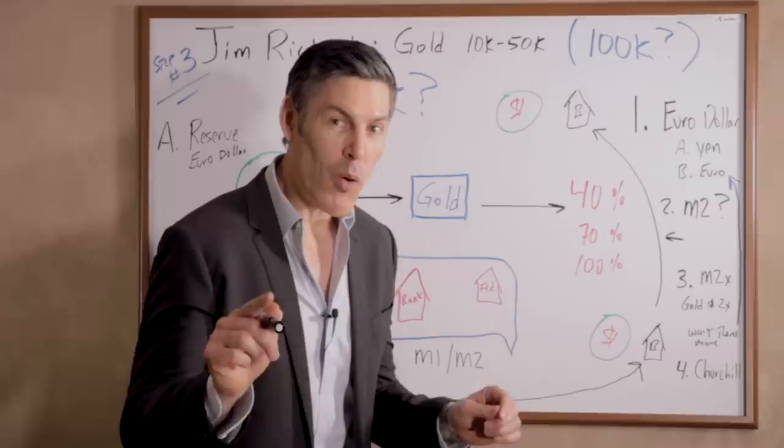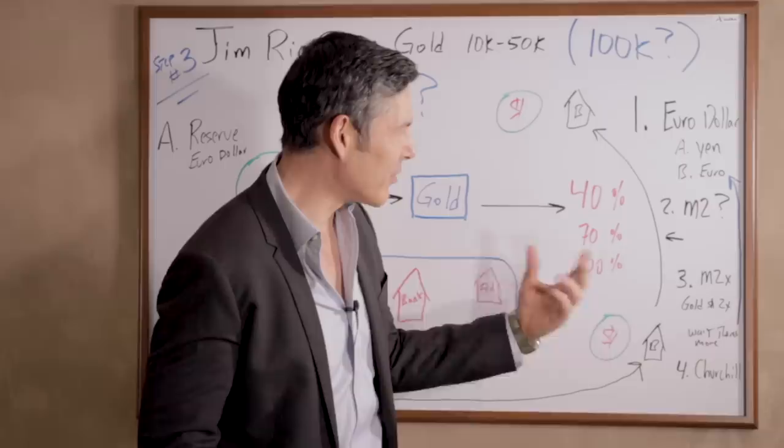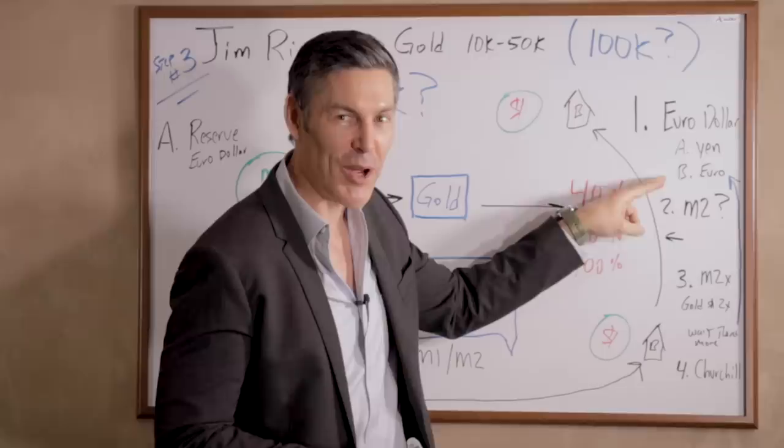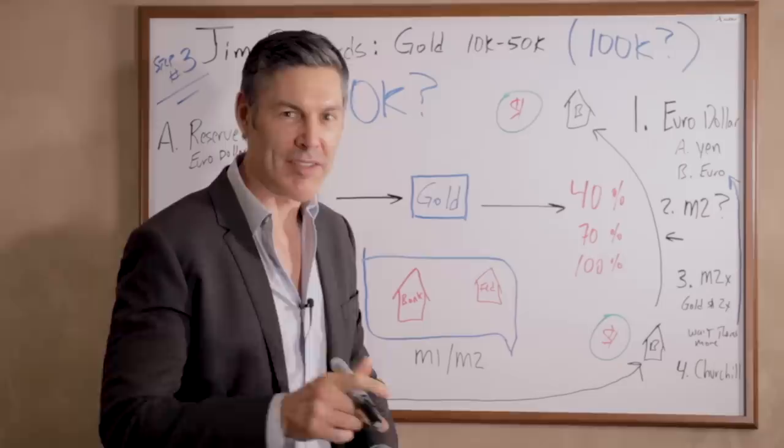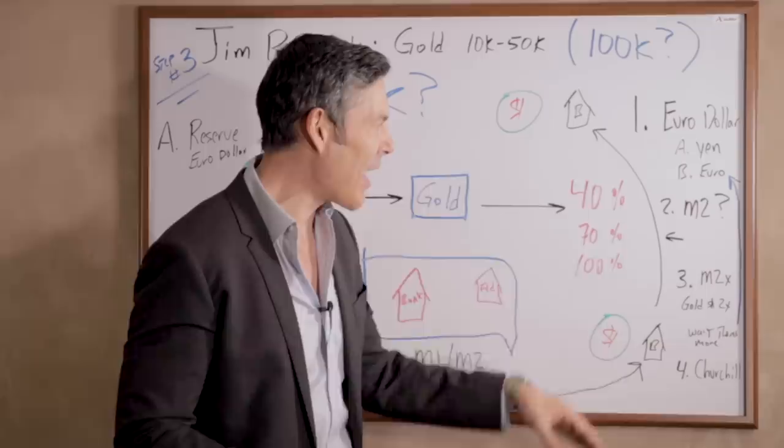Oh, but wait, there is more. It's not just dollars that are created outside of the system. It's yen that are created outside of Japan and euros that are created outside of the euro zone. So not only do we have eurodollars, we have euro yen, and we have euro euros. The money supply has grown exponentially since we have been off the gold standard in 1971.